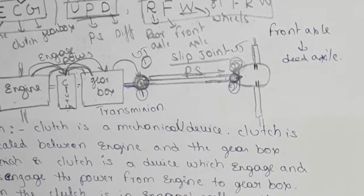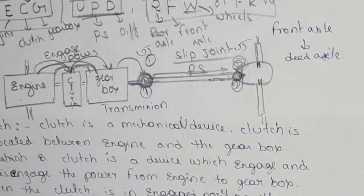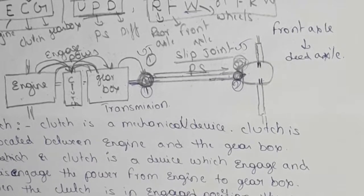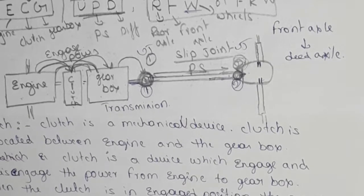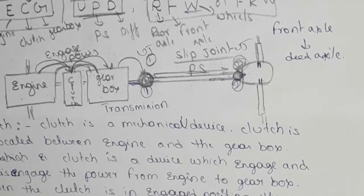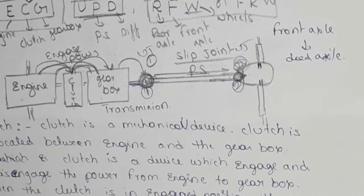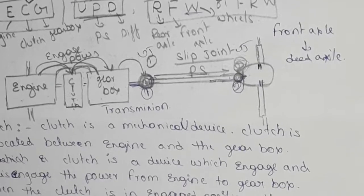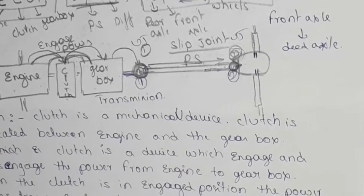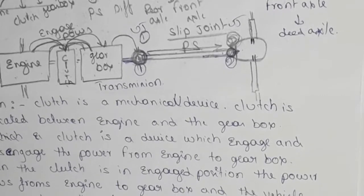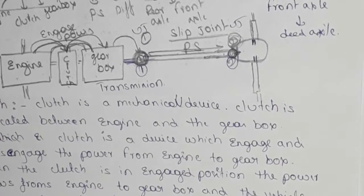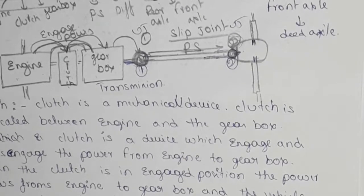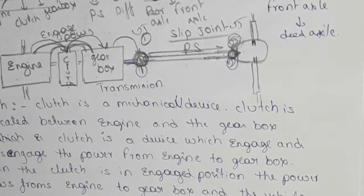The front axle is a dead axle and carries the weight of the vehicle, also facilitating the suspension and steering system. The power obtained from the differential is transmitted to the road wheels through the rear axle half-shafts, which are connected to the differential at one end and to the wheels at the other end.